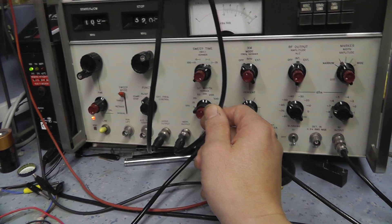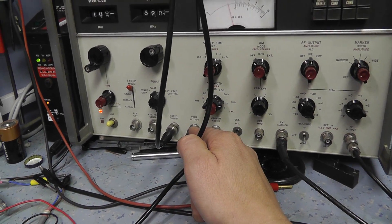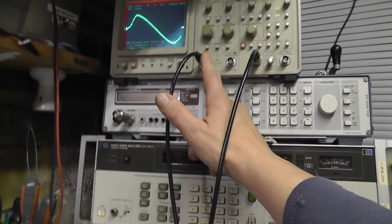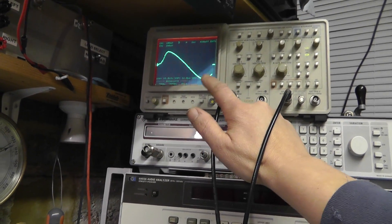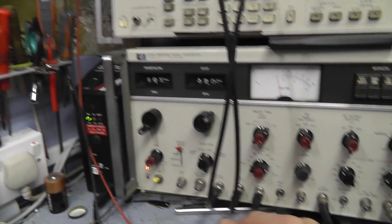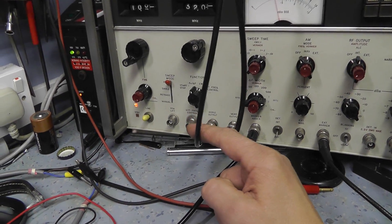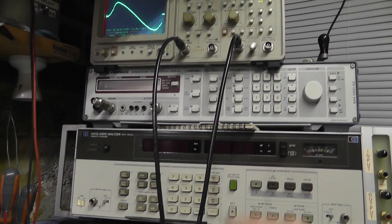So we've got our sweep running and we've got our vertical output of our scope going to channel 1, and that's giving us our S-curve on the waveform here. And our horizontal output.